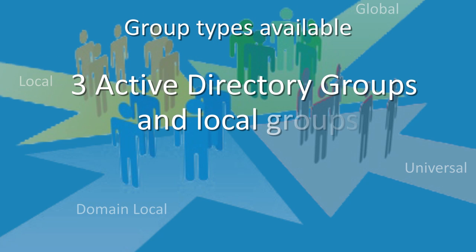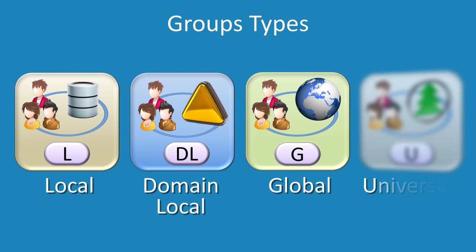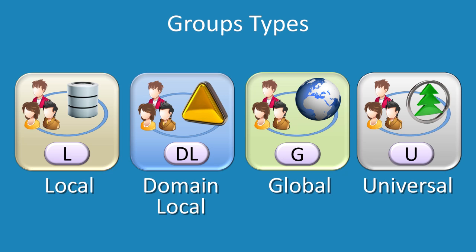There are three different types of groups in Active Directory. There are also local groups which exist only on one computer, taking the total types of groups that Windows supports to four. The main difference between each group is which other groups can be members of that group. The scope of each group determines where it can be used — at the local, domain, forest, or externally trusted domain level. The four types are Local, Domain Local, Global, and Universal. In large multi-domain environments, choosing the right group gives you a lot of advantages.